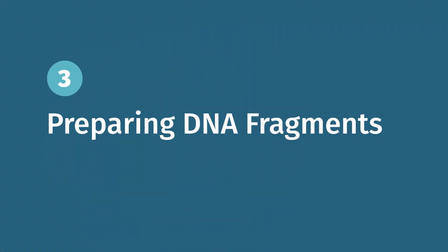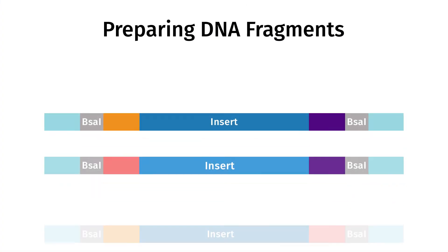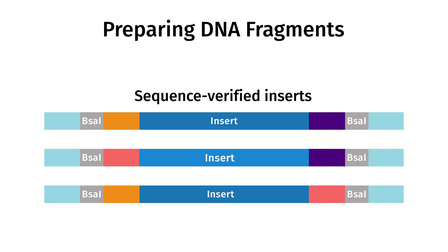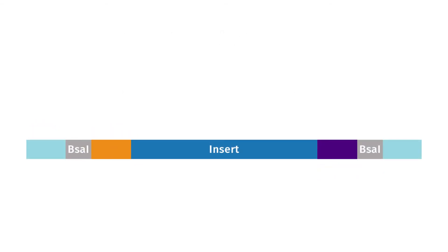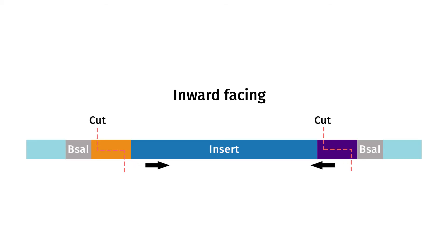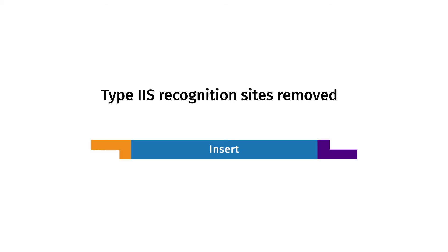You can use any double-stranded DNA fragment for Golden Gate assembly, including plasmids or PCR products. Numerous Golden Gate assembly kits come with plasmids already containing sequence verified inserts. However, PCR makes it simple to convert or accommodate any sequence for Golden Gate assembly. By designing PCR primers with flanking bases, type 2S recognition sites, and an overhang sequence, you can introduce the required recognition site at each end of the PCR product. In contrast to the destination vector, your fragments of interest will have type 2S sites that are considered inward-facing, where the cuts occur between the two recognition sites. This means that the insert fragment no longer contains the type 2S recognition sites after cleavage and cannot be further digested.